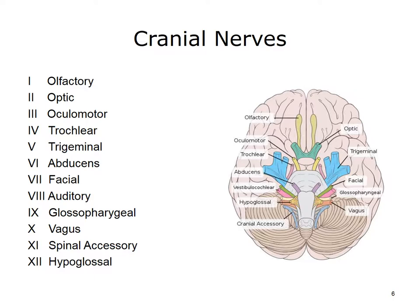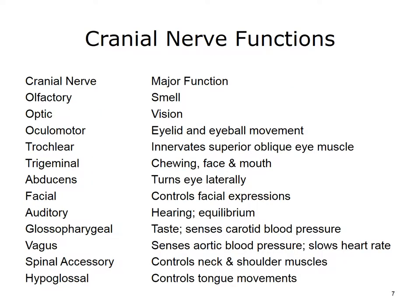The peripheral nervous system refers to all the nervous tissue that is outside the brain and spinal cord. The peripheral nervous system is composed of the cranial nerves and the spinal nerves. As you can see in this slide, there are 12 pairs of cranial nerves that carry messages to and from the brain. They are referred to using Roman numerals, but also have a name associated with their function. Familiarize yourself with this listing of the cranial nerves and their major functions.